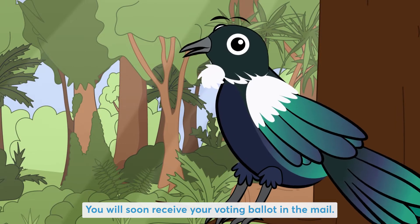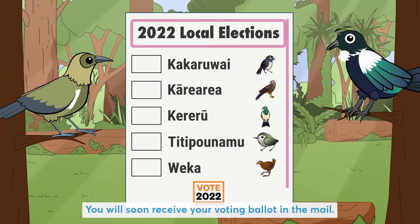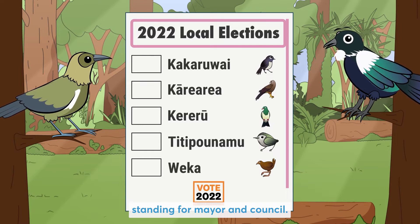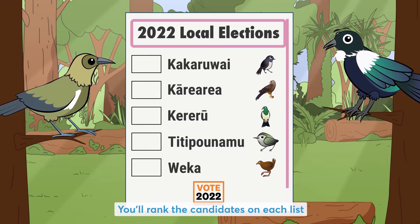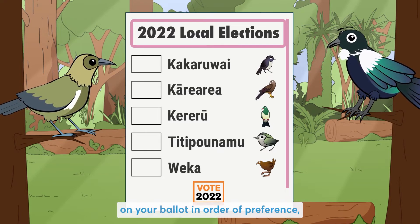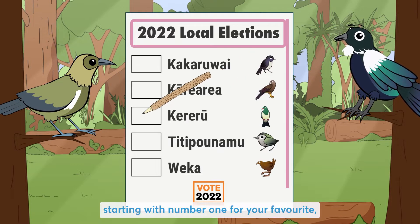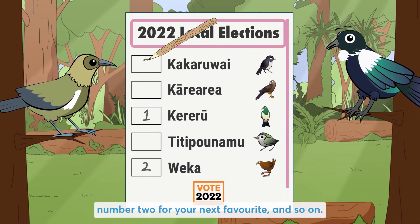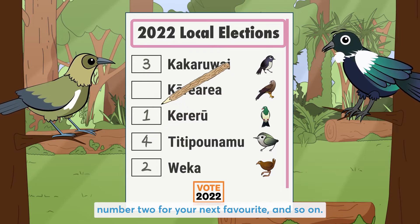You will soon receive your voting ballot in the mail. On your ballot, you'll see a list of candidates standing for mayor and council. You'll rank the candidates on each list in order of preference, starting with number 1 for your favourite, number 2 for your next favourite, and so on.